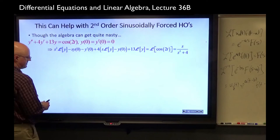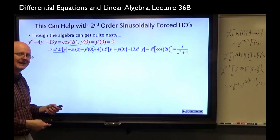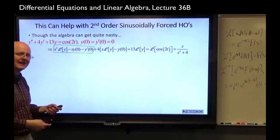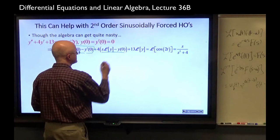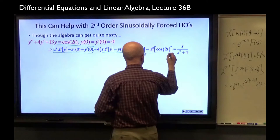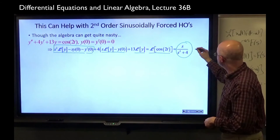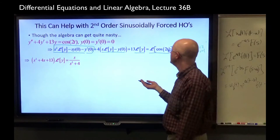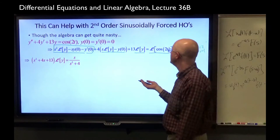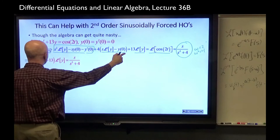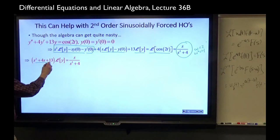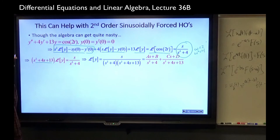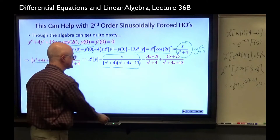Taking the Laplace transform on both sides: the Laplace transform of y'' yields a specific expression, plus 4 times the Laplace transform of y', plus 13 times the Laplace transform of y. On the right side, the Laplace transform of cos 2t is s/(s²+4), since ω = 2 and ω² = 4. Solving for L{y} — it's an algebra equation linear in L{y}. After plugging in the zero initial conditions, factoring out L{y}, and dividing by (s²+4s+13), we obtain the expression for L{y}.